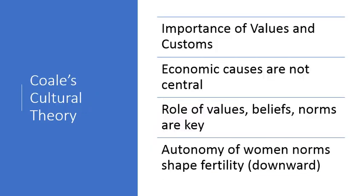Cole offers a cultural theory that more or less critiques the economic theories. He says economic causes are not central, and points back to the role of value and custom, the role of culture in general — values, beliefs, and norms — but also points to the importance of the autonomy of women, and the way that results in different fertility outcomes.